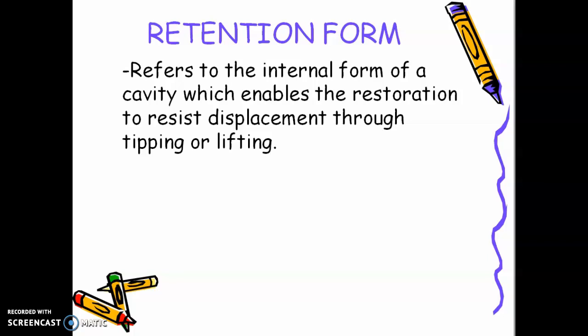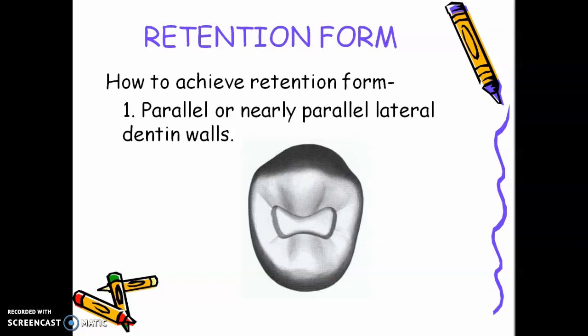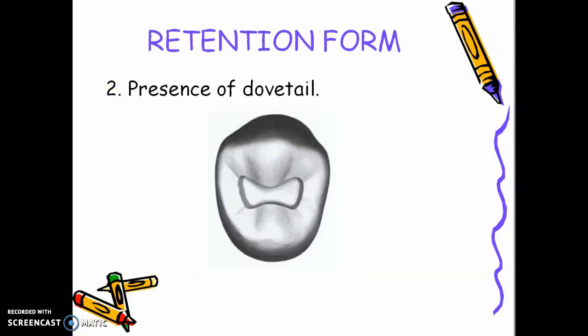So how do we achieve retention form? You should have parallel or nearly parallel lateral dentin walls. Remember, enamel walls, dentin walls, the inner part of your preparation. Presence of dovetail. This is your dovetail. I know the dovetail is part of your outline form, but the main benefit of your dovetail is retention form to prevent lateral displacement of your restoration. Again, if we will have a quiz or exam, if the question is what step in tooth preparation is dovetail, then your answer will be retention form. Board exam question.